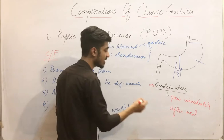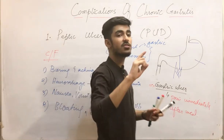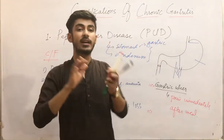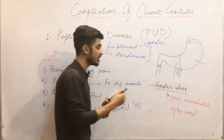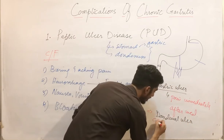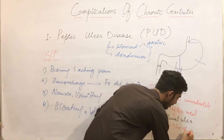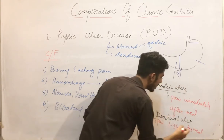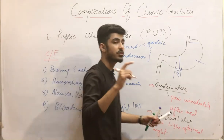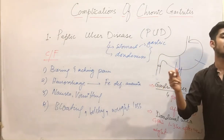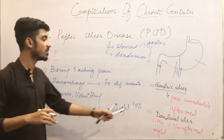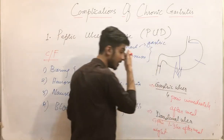Gastric ulcer has pain immediately after a meal. If the patient says no, ask whether they feel pain one to three hours after the meal or at night. If yes, that indicates a duodenal ulcer. In duodenal ulcer, pain occurs one to three hours after the meal or at night, and importantly, the pain is relieved by eating a meal.